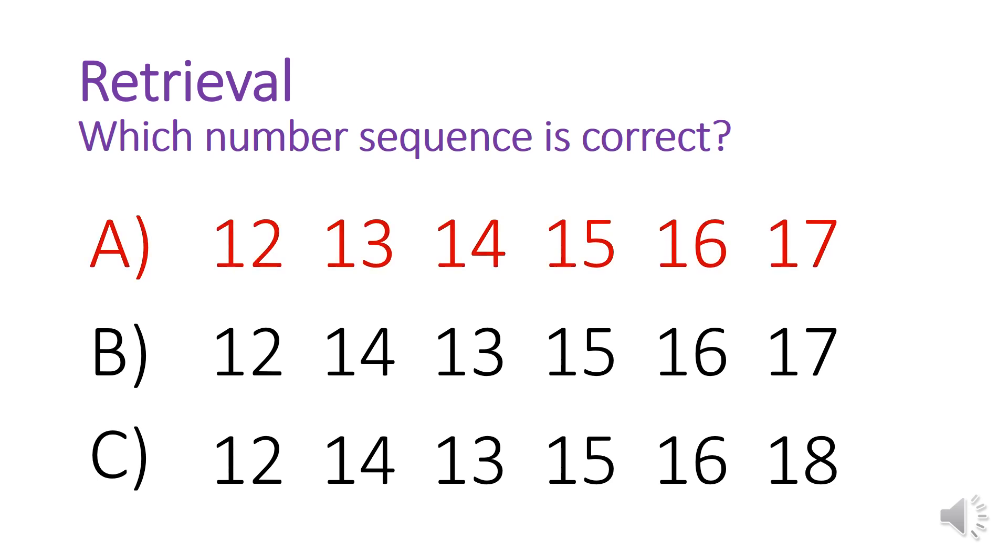It is A because it goes 12, 13, 14, 15, 16, 17, whereas B and C had some mistakes if you had a close look. Well done.